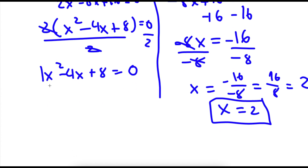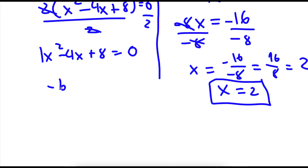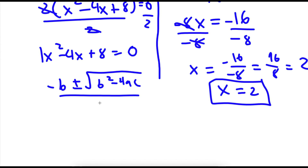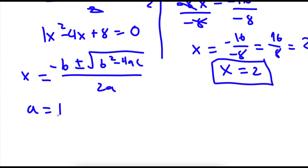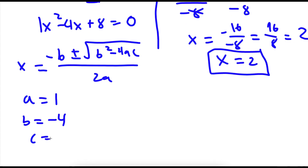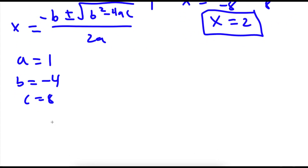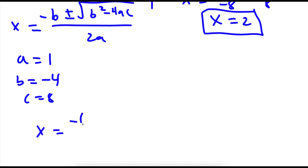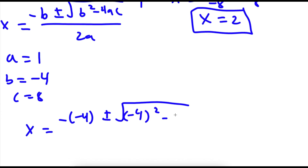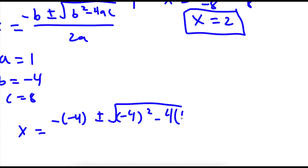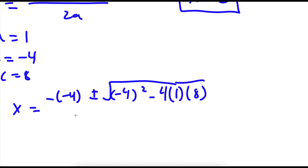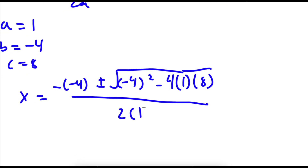To solve x squared minus 4x plus 8 equals 0, I'm going to use the quadratic formula: negative b plus or minus the square root of b squared minus 4ac, all over 2a. In this case, a is equal to 1, b is equal to negative 4, and c is equal to 8. So now I have x equals negative of negative 4, plus or minus the square root of negative 4 squared minus 4 times 1 times 8, all over 2 times 1.